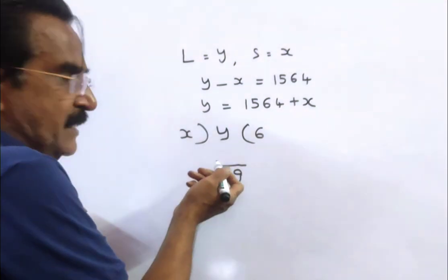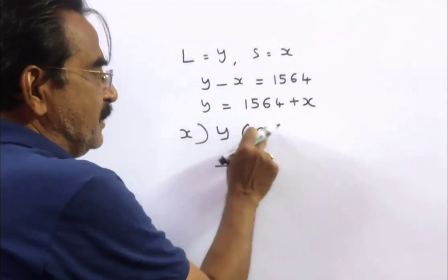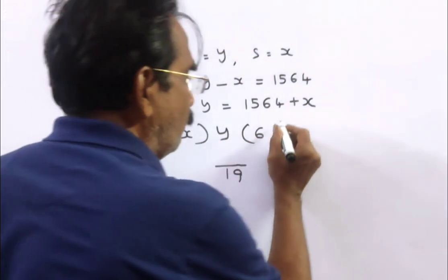So from this, we can say 6x plus 19 is equal to y.